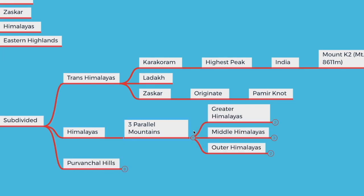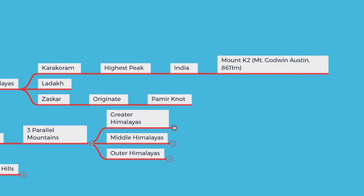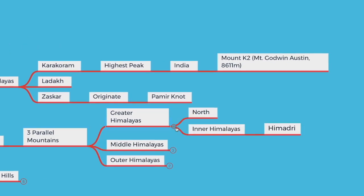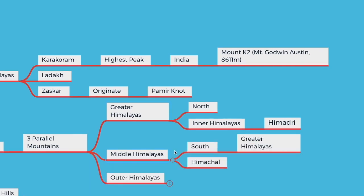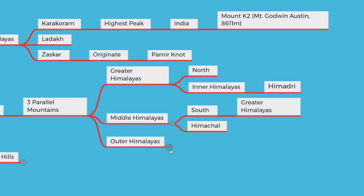Let's move forward to the Himalayas. There are three parallel mountains: the Greater Himalayas, Middle Himalayas, and Outer Himalayas. The Greater Himalayas is the northernmost range, also referred to as Inner Himalayas or Himadri. The Middle Himalayas are south of the Greater Himalayas and are also called Himachal. The Outer Himalayas are the southernmost ranges and are called Shivaliks.